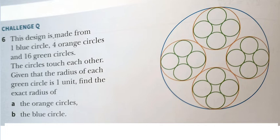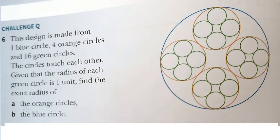This design is made from one blue circle, four orange circles, and 16 green circles. The circles touch each other. Given that the radius of each green circle is one unit, find the exact radius of the orange circles and the blue circle.